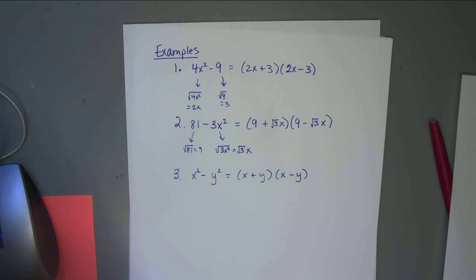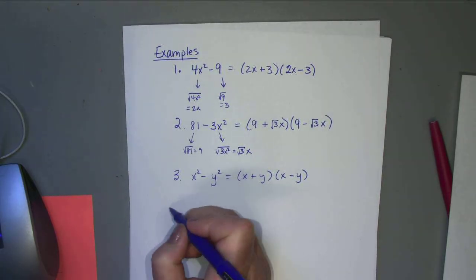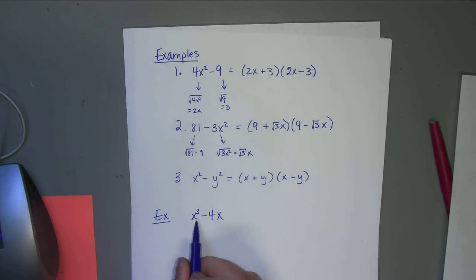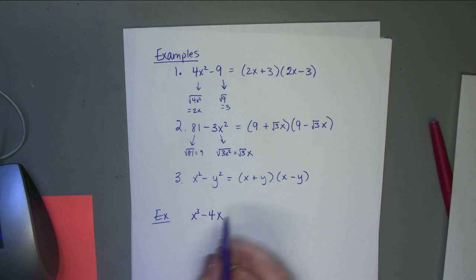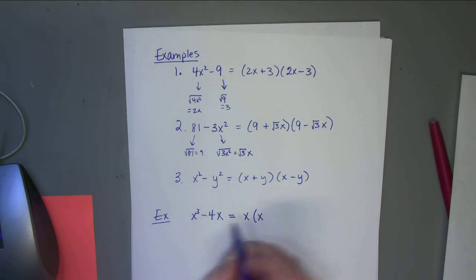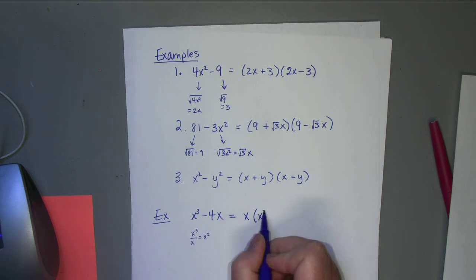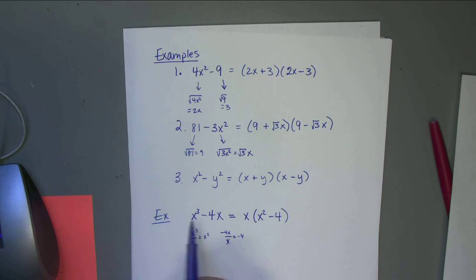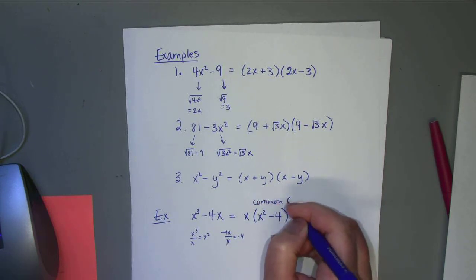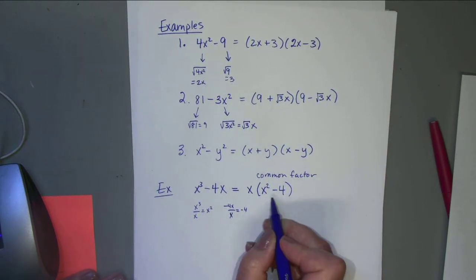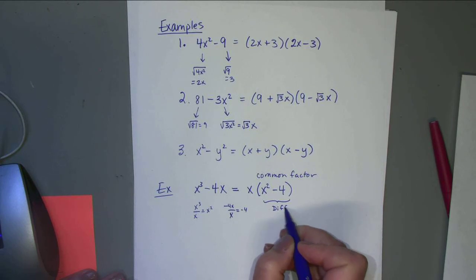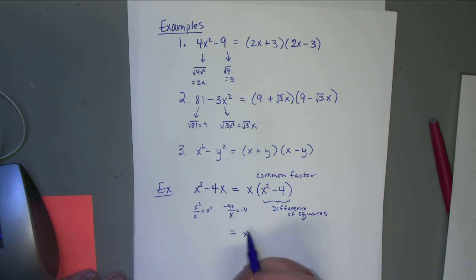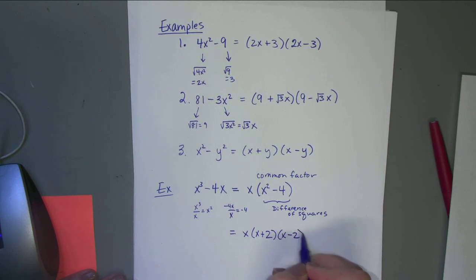You do have to be careful — a minus sign doesn't automatically mean a difference of squares. Sometimes we need to do a common factor first. For example, x³ - 4x: we can pull out an x. Dividing x³ by x gives x², and dividing -4x by x gives -4. So we get x(x² - 4). Now x² - 4 is a difference of squares, so we continue to factor: x(x+2)(x-2). This is completely factored.